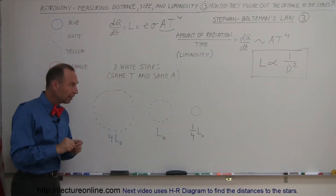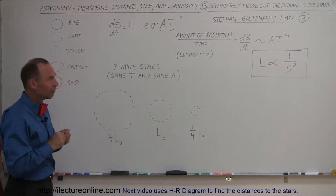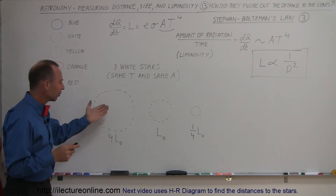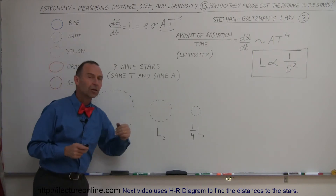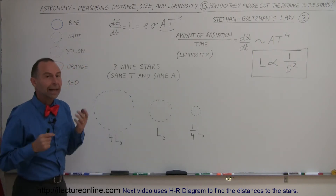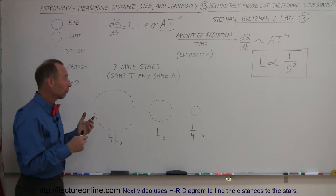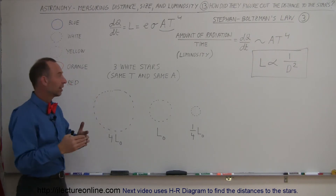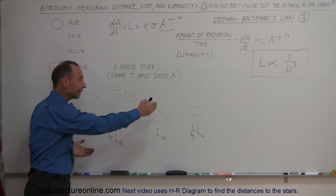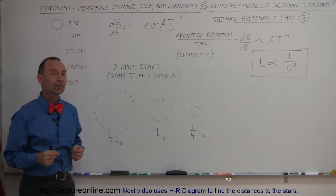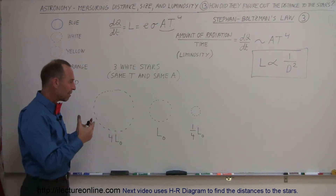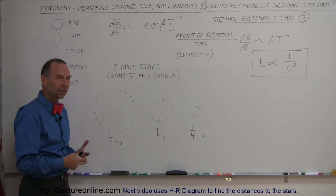Now let's imagine we're looking at three identical stars — identical in terms of temperature and size. Let's say three white stars, all three at 10,000 degrees Kelvin.